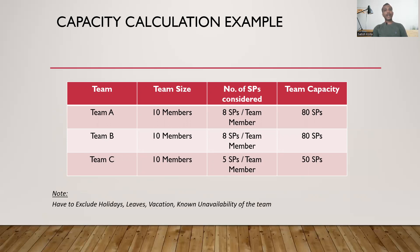We need to remember to exclude the unavailability of the team, which includes holidays, planned vacations, leaves, or any known unavailability. For example, team C might be going through training, cross-training, reskilling, documentation, or getting hands-on experience — that is a known unavailability, which we exclude directly from the capacity calculation.